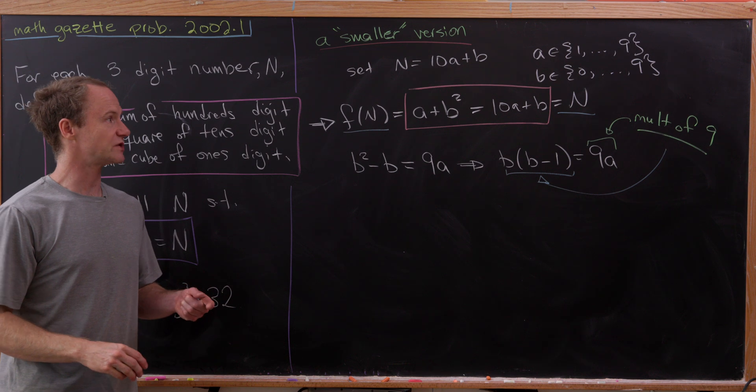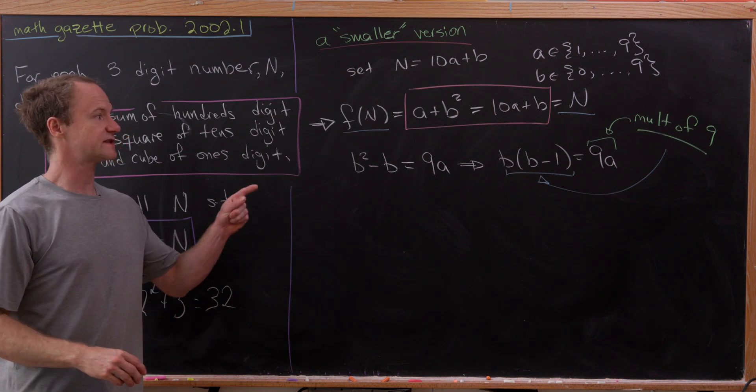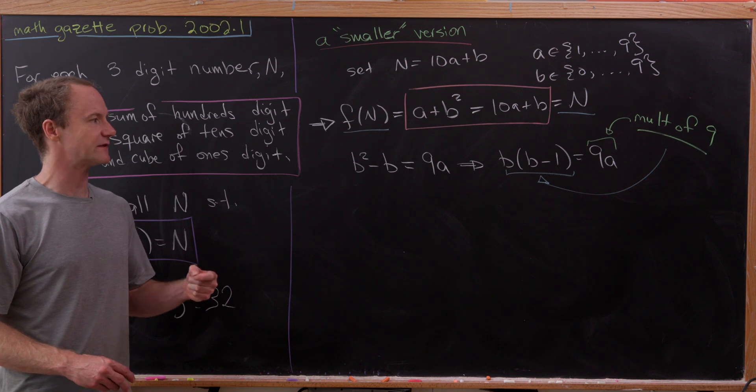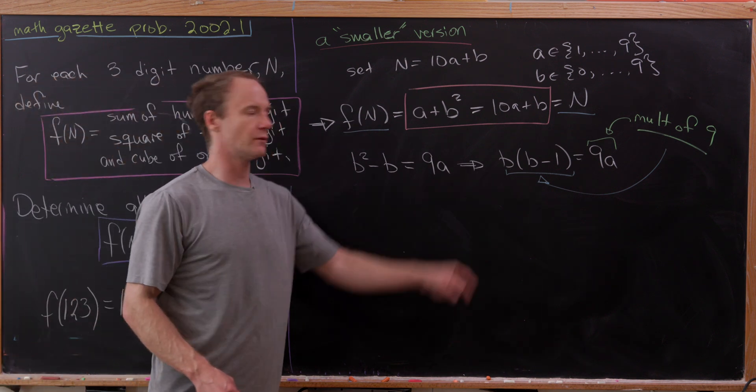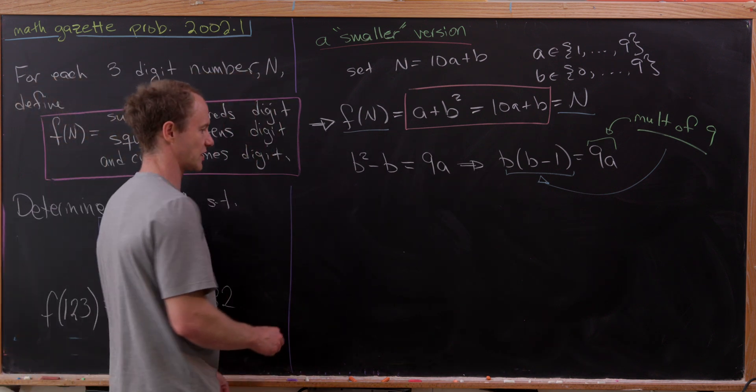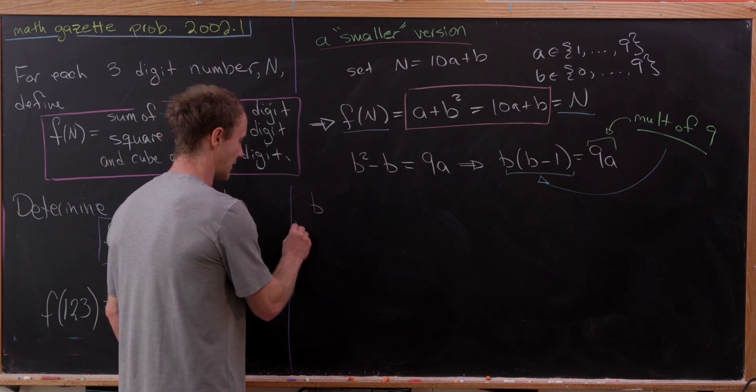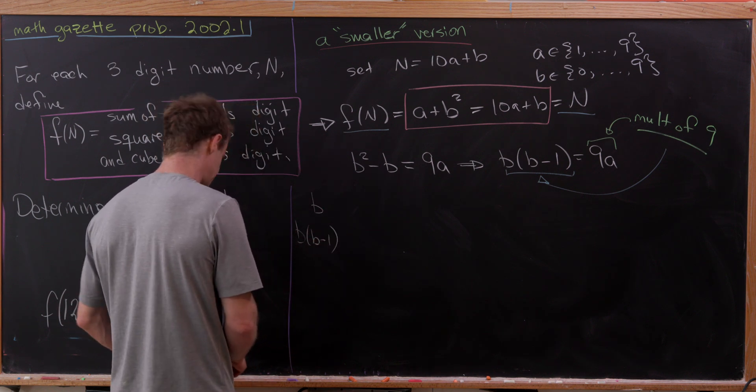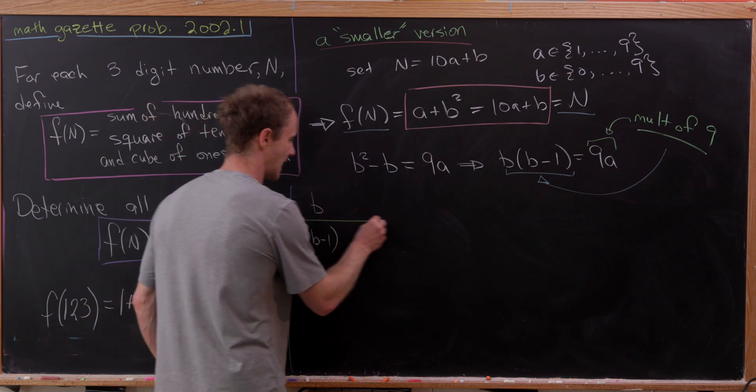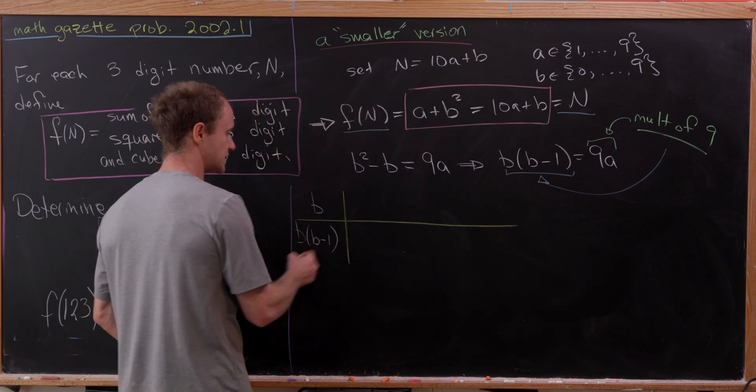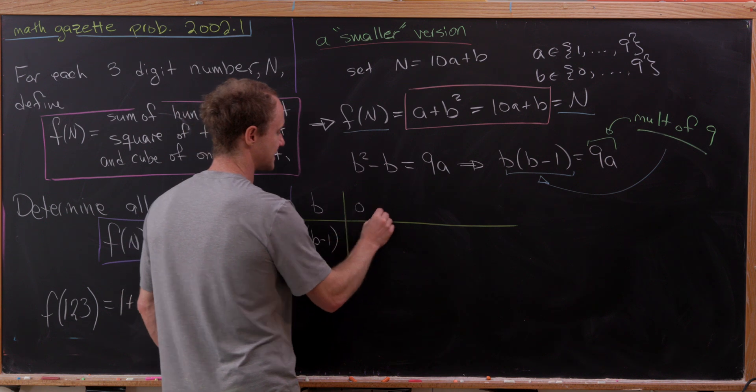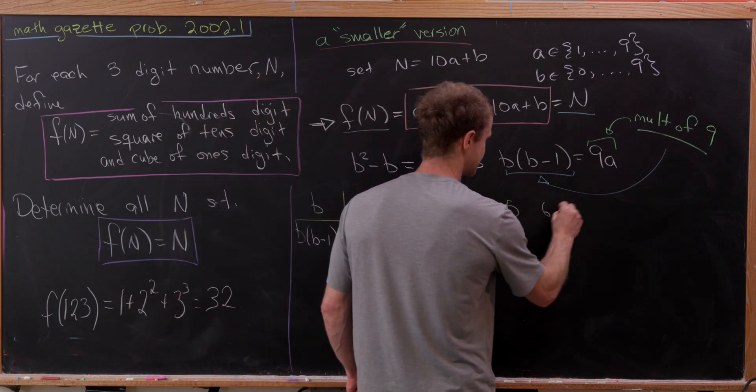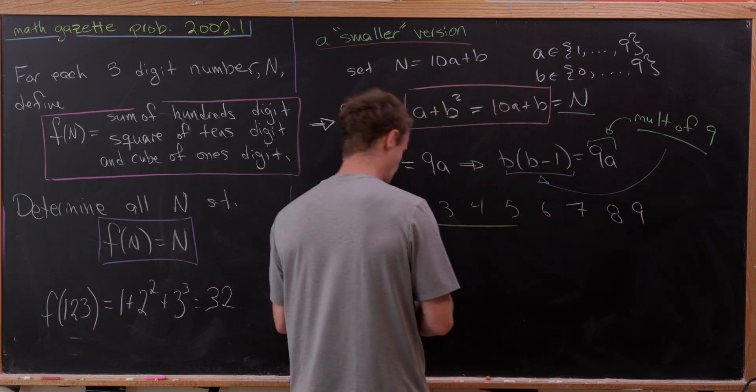At this stage, what we'll do is we'll take all possible values of b, and we're going to see which ones give us multiples of 9 when we plug them into this type of expression. So let's make a table. We've got b, and now we have b times b minus 1. So maybe b is going to go from 0, 1, 2, 3, 4, 5, 6, 7, 8, and finally 9.